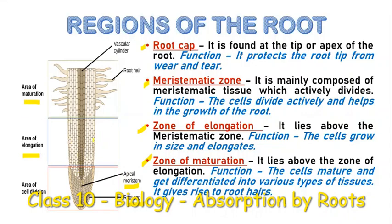Above the meristematic zone is the zone of elongation, where the cells generally elongate. Above it is the zone of maturation, where the cells of the roots get differentiated to form different tissues — xylem, phloem, and cortical cells. From the zone of elongation, the root hairs are given out.